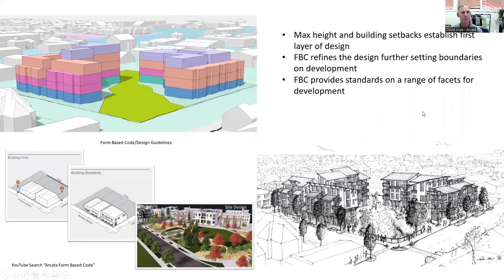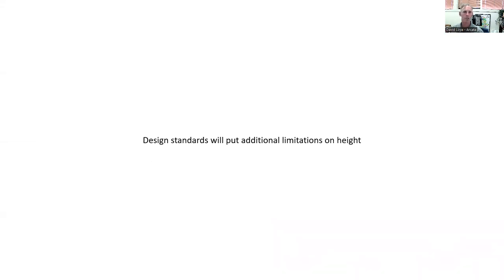Recapping: maximum height and building setbacks are the first layer of design, and there are several more that can be implemented. The form-based code further refines development boundaries, including upper floor setbacks, how much glazing is on the frontage, where publicly accessible private open space would be, and potentially street trees and more. Now I want to jump into how design standards will put additional limitations on height and how that impacts the community around new builds — they impact shading, street impacts, massing, and design, among other features.